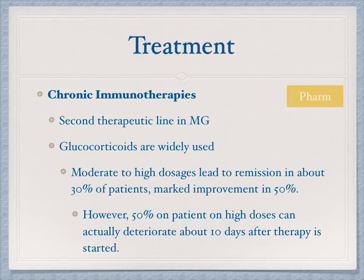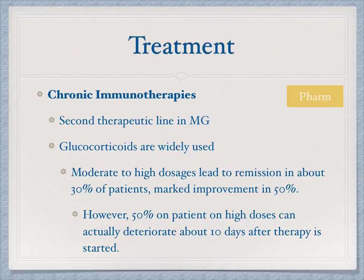In addition to acetylcholinesterase medication, chronic immunotherapies can be used as a second-line treatment. Most patients are placed on some type of oral steroid. With moderate to high doses, remission can be achieved in about 30% of patients, and about 50% show marked improvement. However, 50% of patients on high doses can actually deteriorate about 10 days after therapy begins.